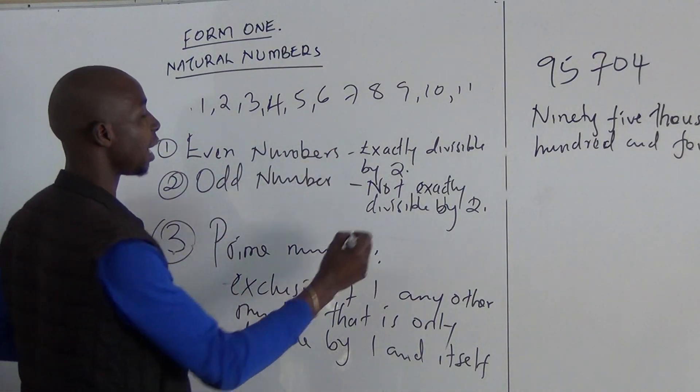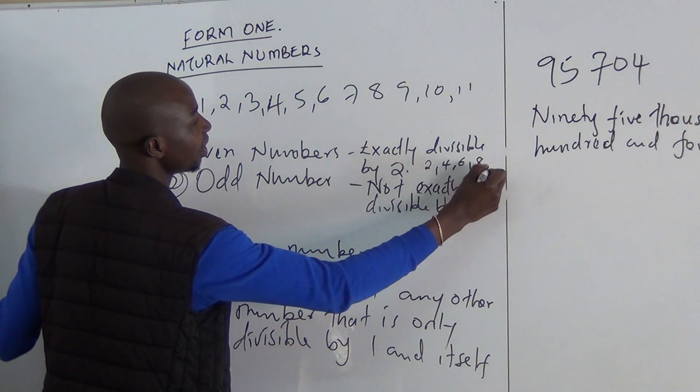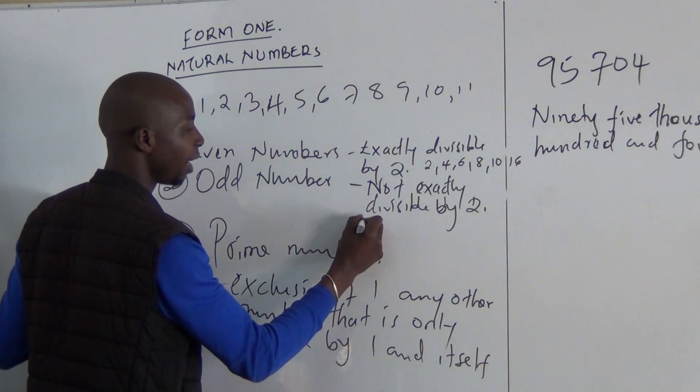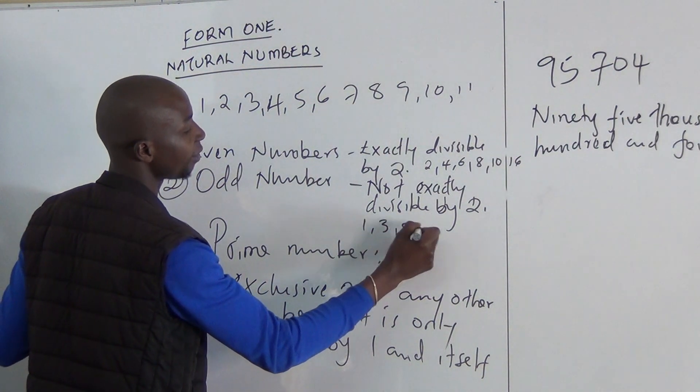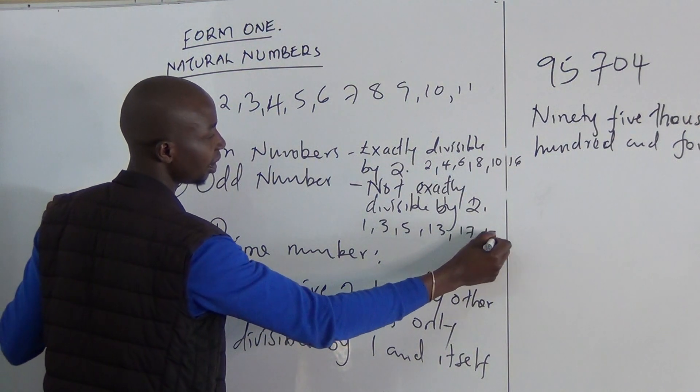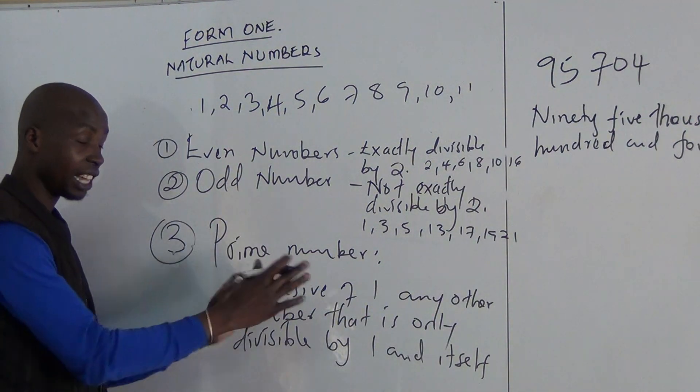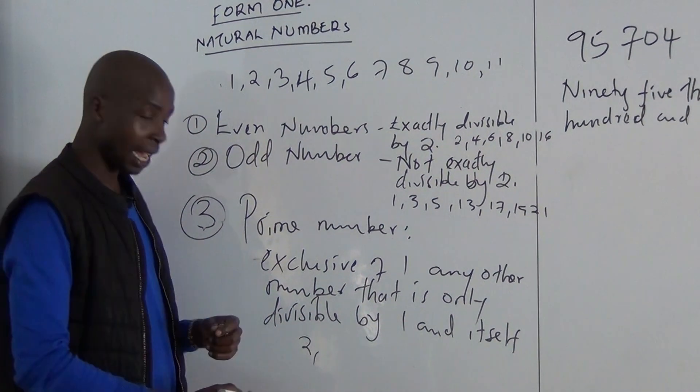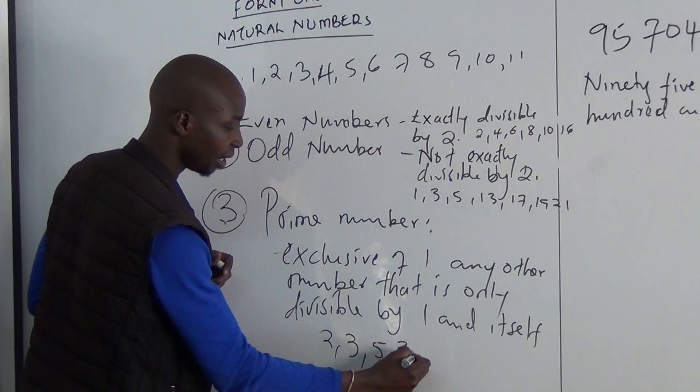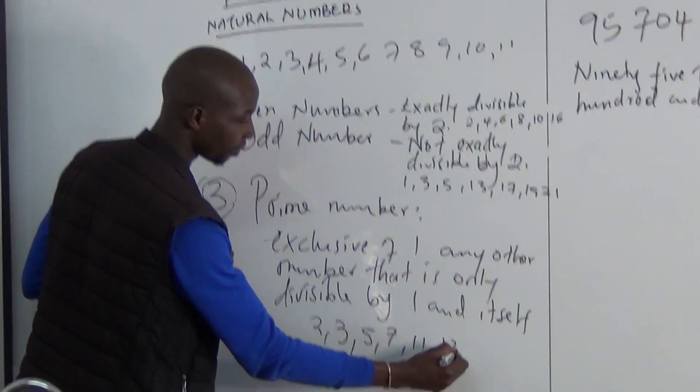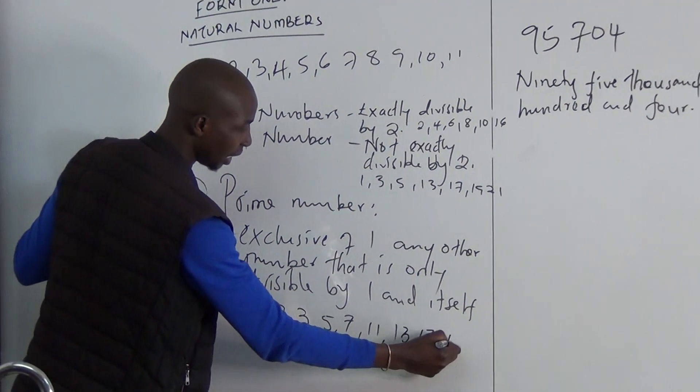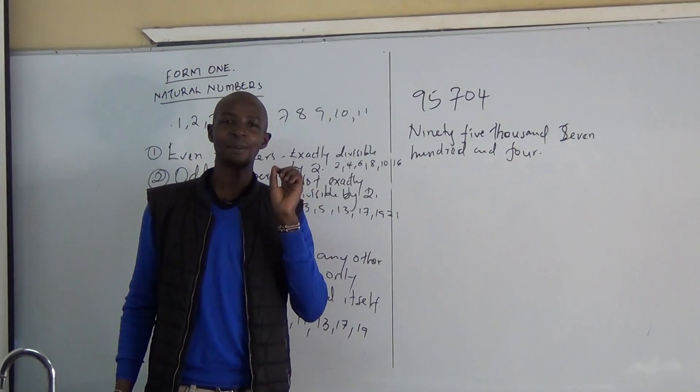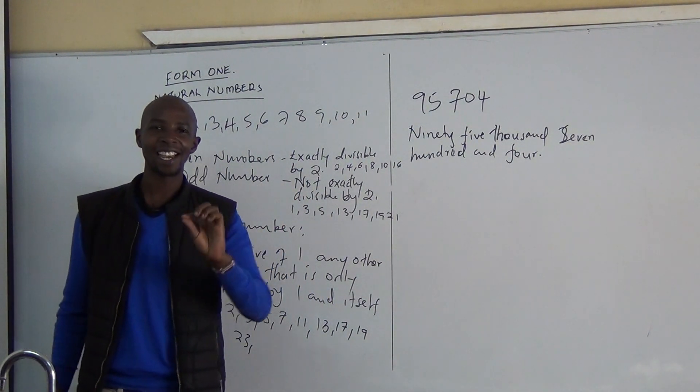Example of an even number we can say 2, 4, 6, 8, 10, 16. And here I will have 1, 3, 5, 13, 17, 19, 21, etc. They are not exactly divisible by 2. And here I have a number like 2, I have a number like 3, I have a number like 5, 7, 11, 13, 17, 19, 23. Your work: Can you get me the prime numbers between 40 and 50?